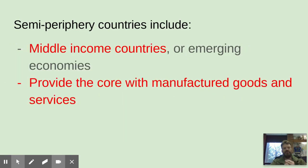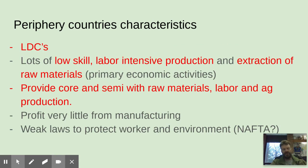Semi-periphery countries are middle-income or emerging economies — a place like Brazil or Argentina is a good example. They provide the core with manufactured goods and services. The periphery countries are the LDCs — the least developed countries — with lots of low-skill, labor-intensive production. These are usually high-population areas because people need jobs, so factory work is sent over there and people are happy to have it.